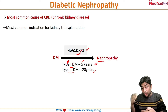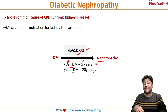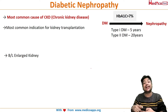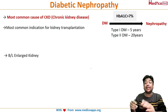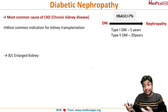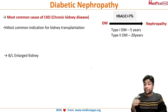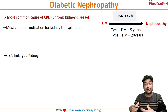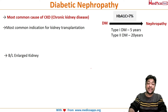As a doctor, your aim should be to keep the HbA1c less than 7. Diabetic nephropathy generally presents as a bilaterally enlarged kidney on ultrasonography. One of the most common exam questions is: what is the differential diagnosis of a bilaterally enlarged kidney?